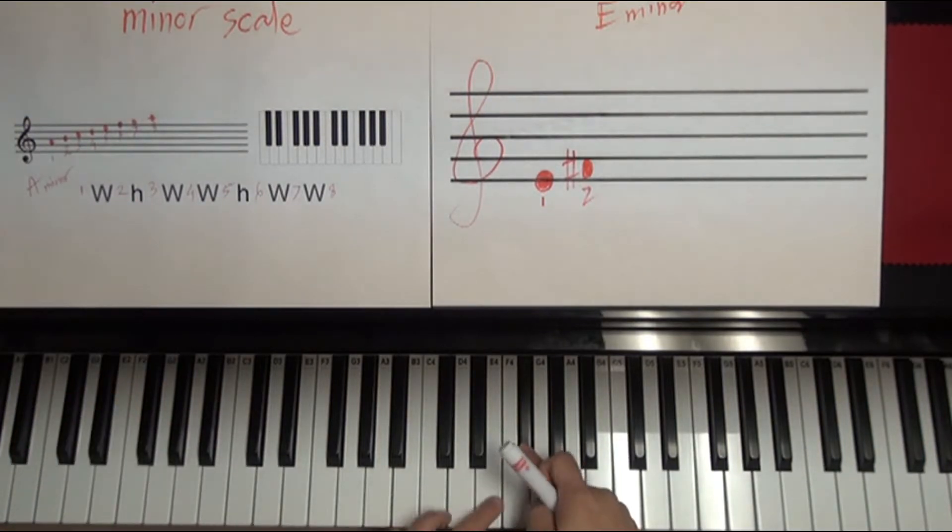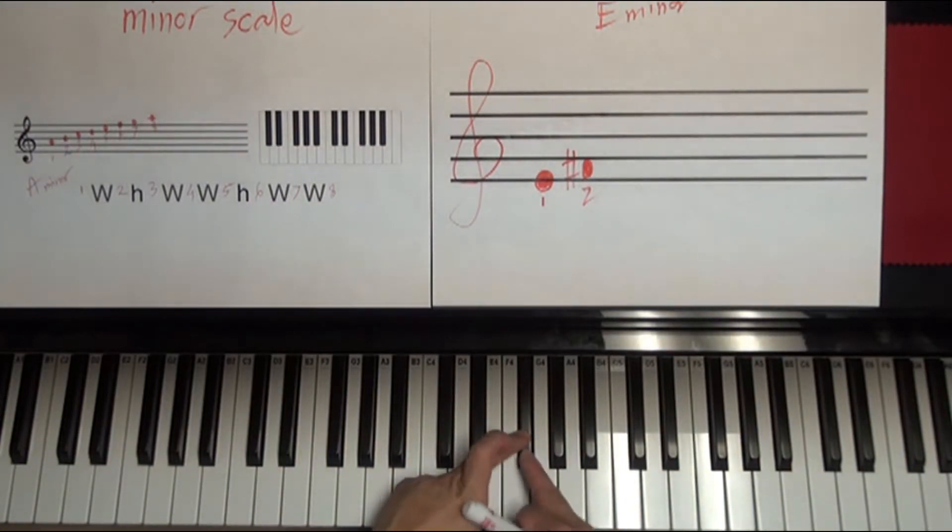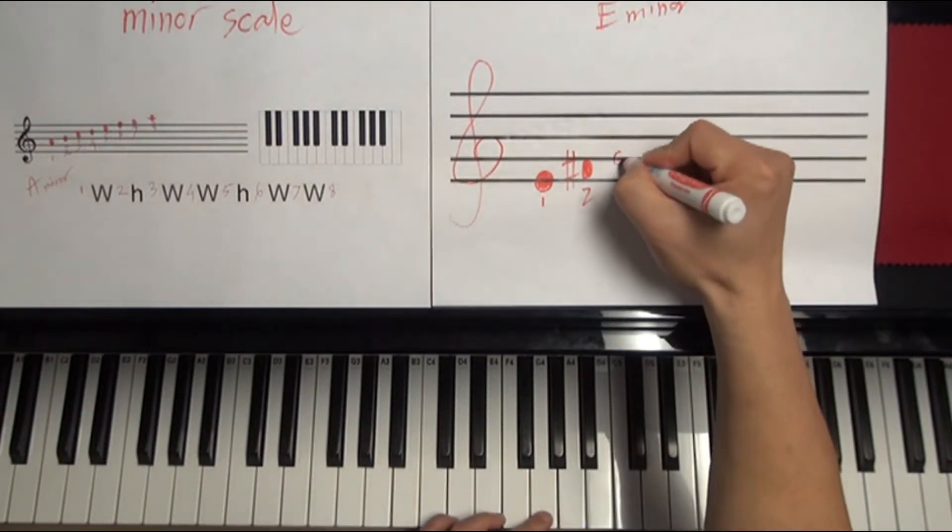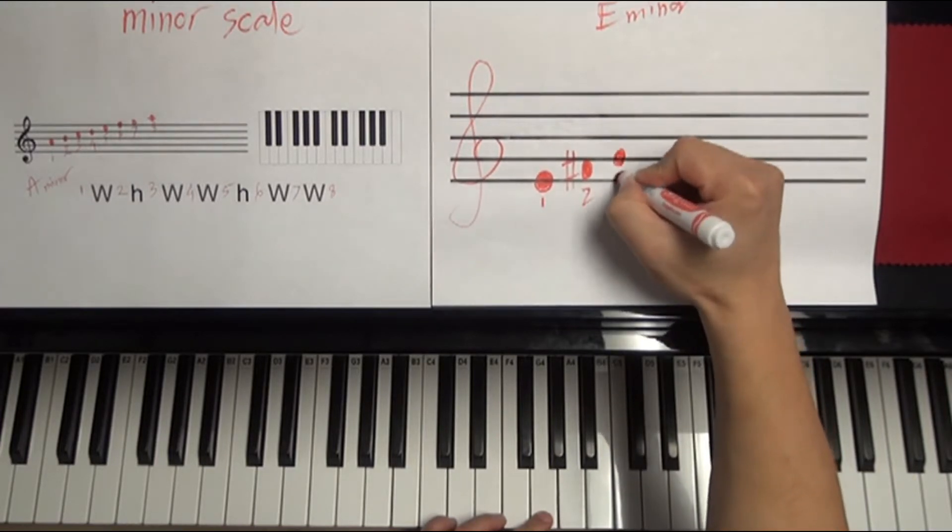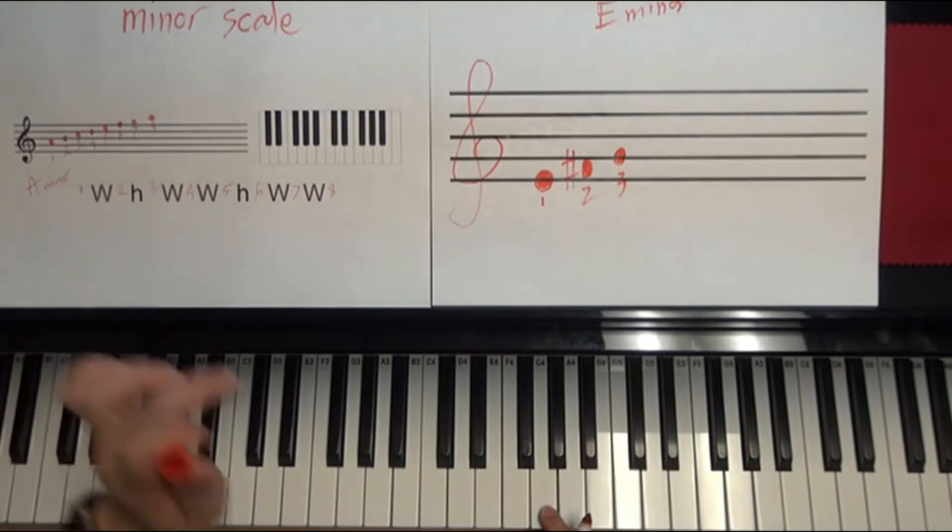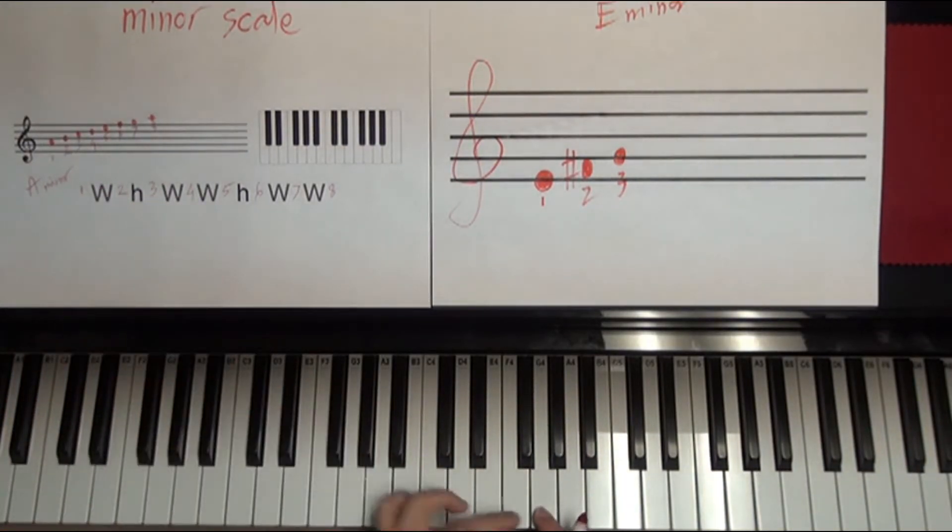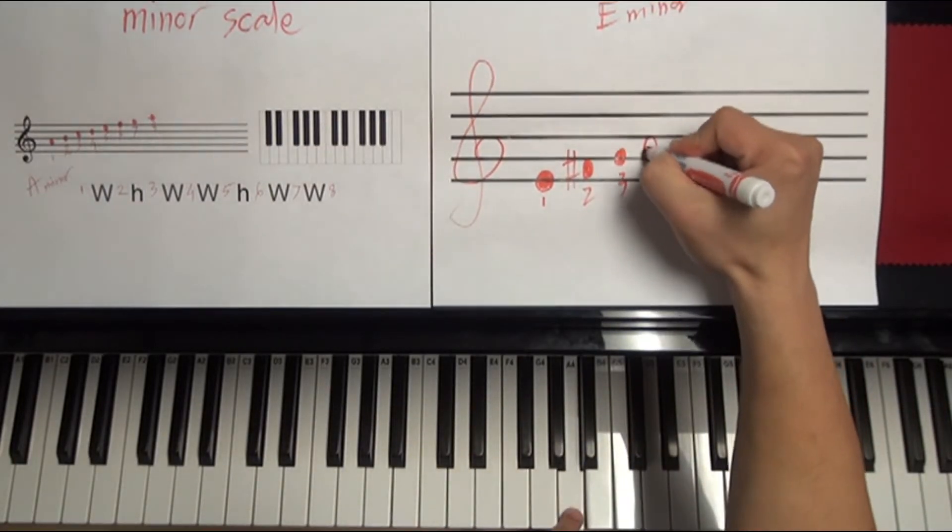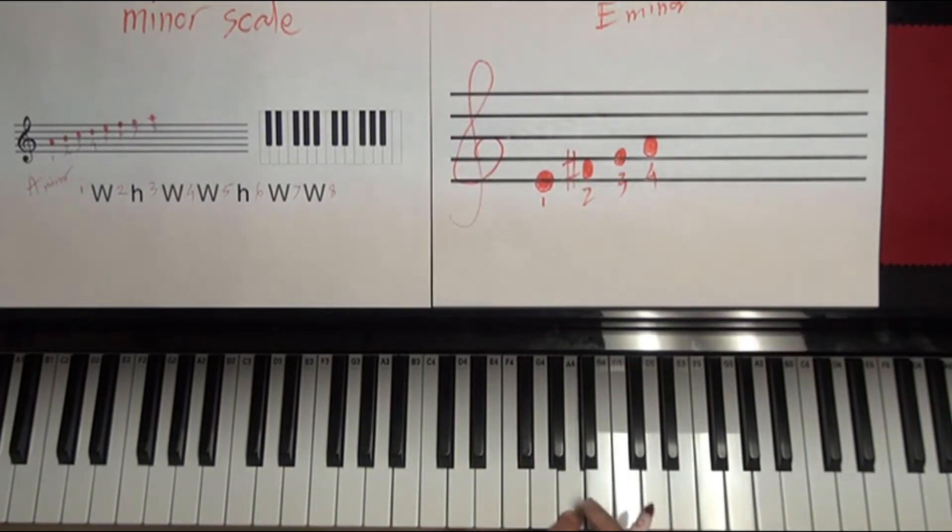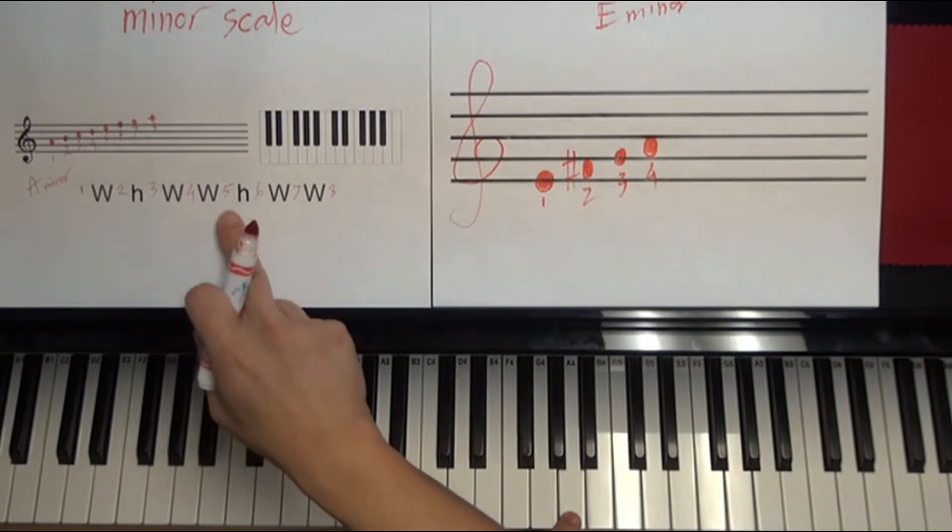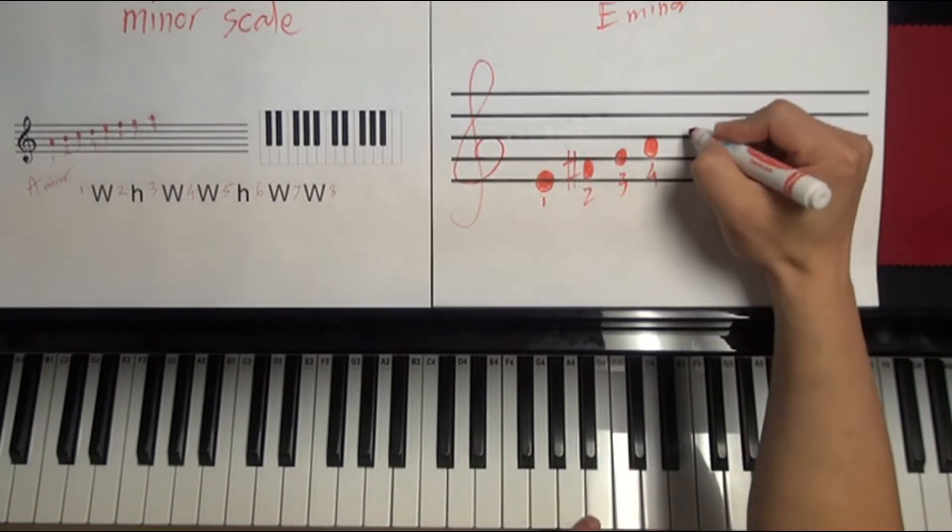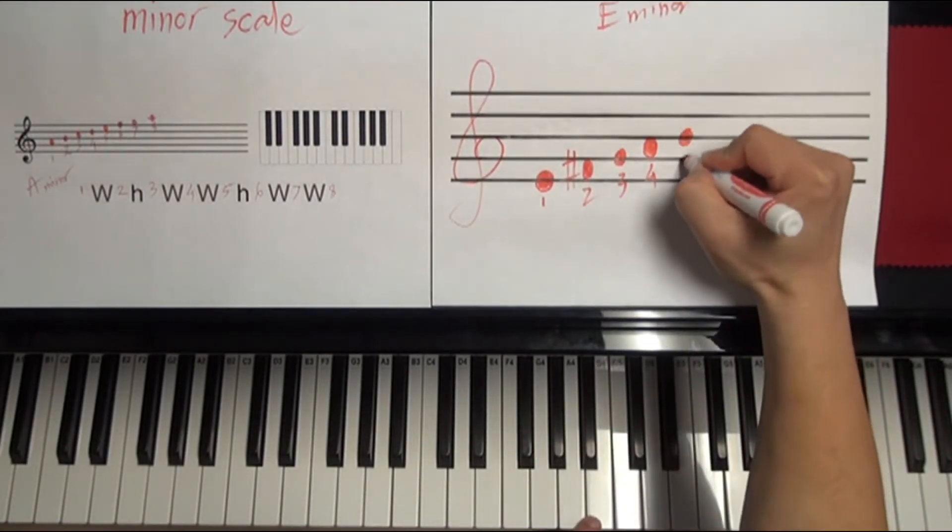Now from 2 to 3, in the minor scale formula, it demands that from 2 to 3 have to be half step. So from F sharp down, up, that's a G. So it's perfect on G. So that's the third step. Now from 3 to 4, note 3 to 4, it needs to require a full step. So perfect, G to A, that's a whole step. There's a black key in the middle, right? Now from A, now from 4th to 5th, it has to be a whole step also. So 4th to 5th, that's whole step. A to B, that's perfect.